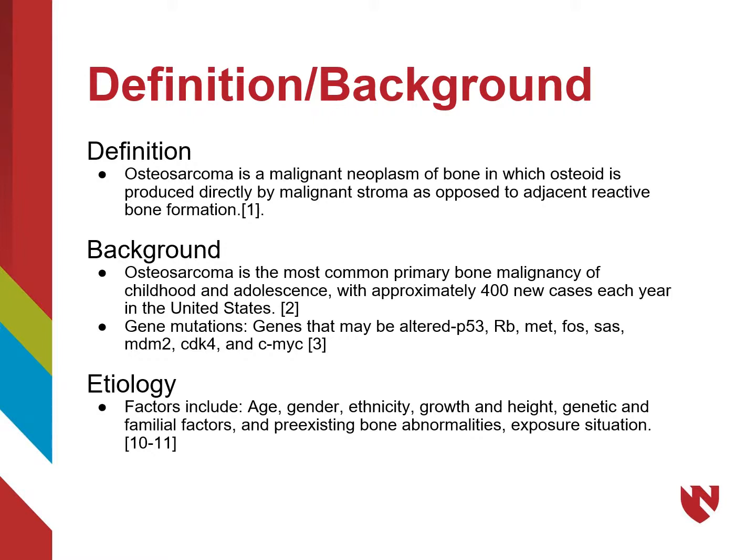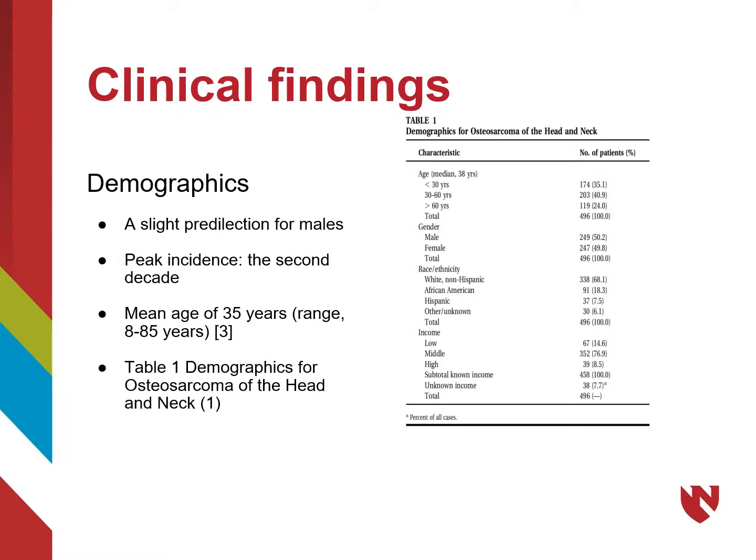Some gene mutations are listed. Etiologic factors include age, gender, ethnicity, height and growth, genetic and familial factors, and pre-existing bone abnormalities as well as exposure situation. Some demographics include a slight predilection for males, occurring most in the second decade of life, with the mean age of about 35 years.